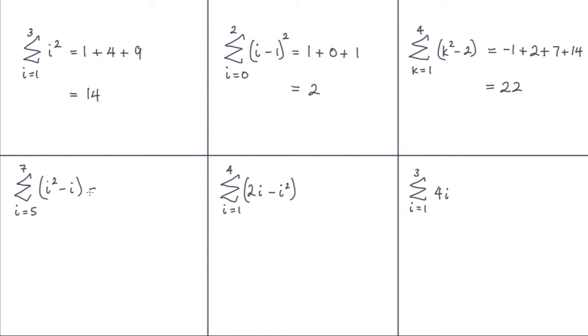On to the next example. And here we have I squared minus I. So we put 5 in first. 5 squared is 25. Minus 5 is 20. Popping 6 in. 6 squared is 36. Minus 6 is 30. Then we're going to put 7 in here. 7 squared is 49. And 49 minus 7 is 42. Adding those together we get 50, 90, 2.